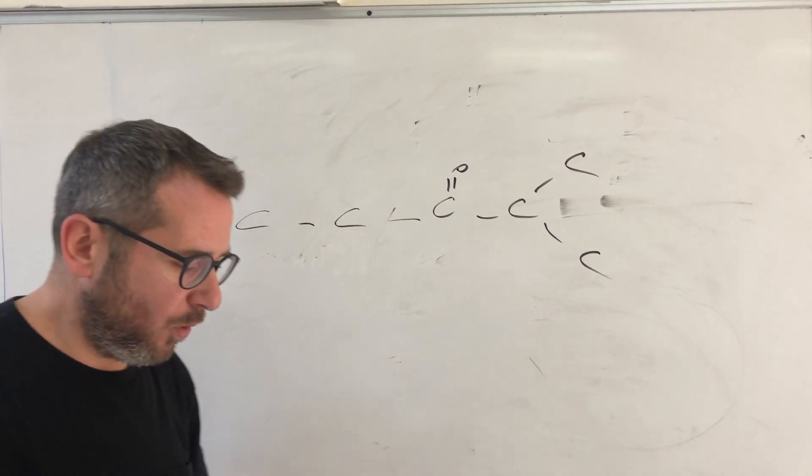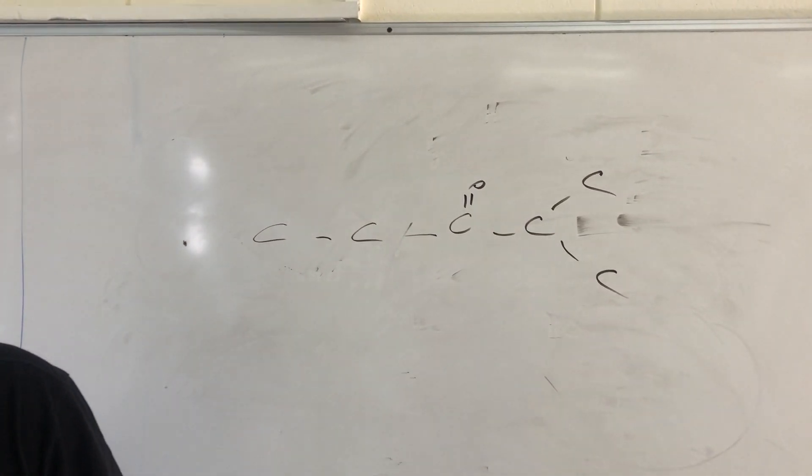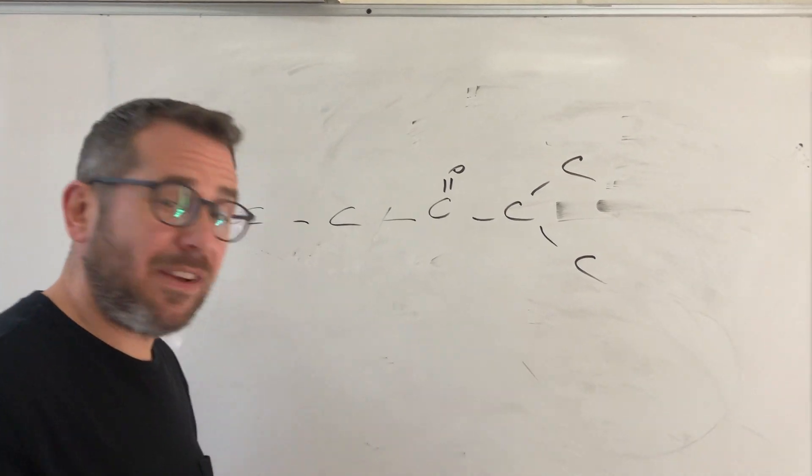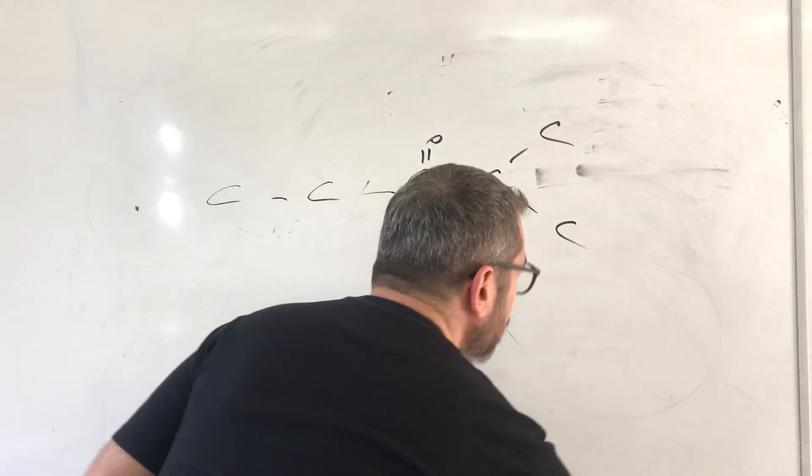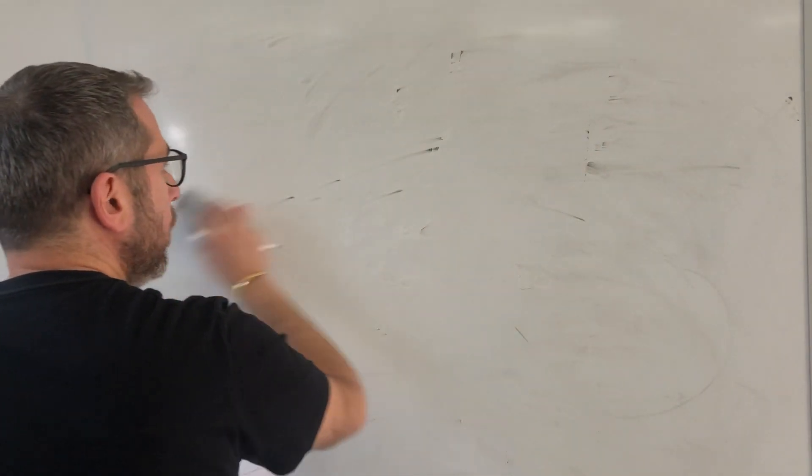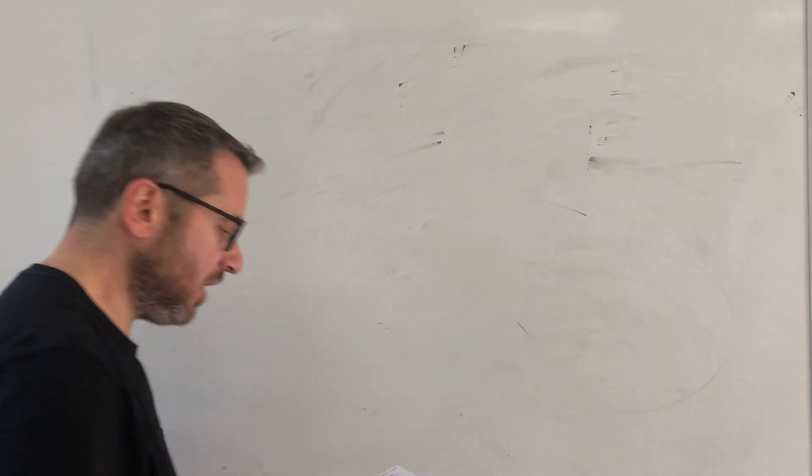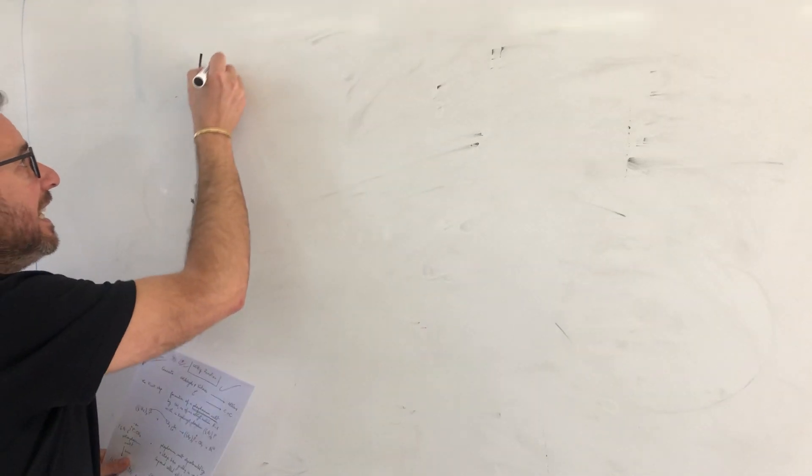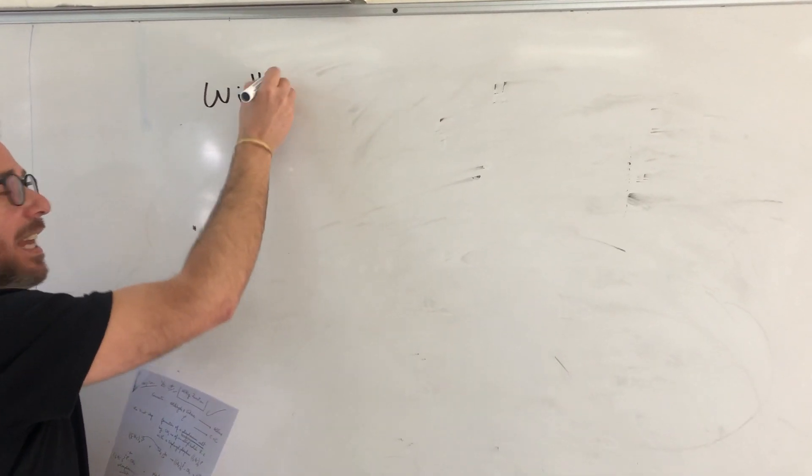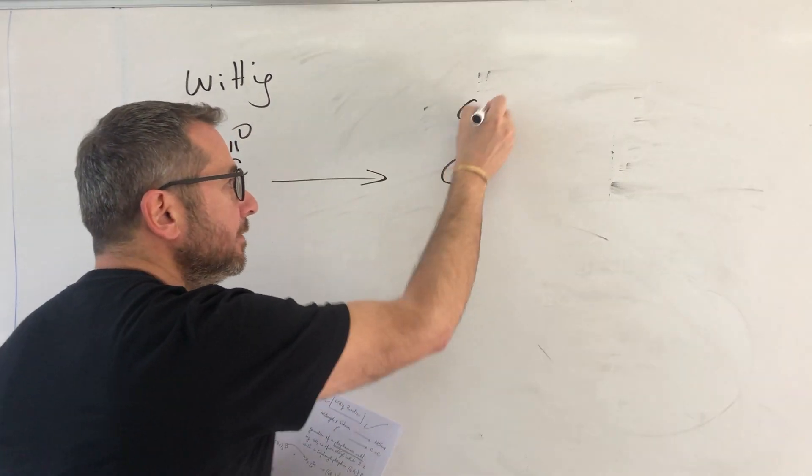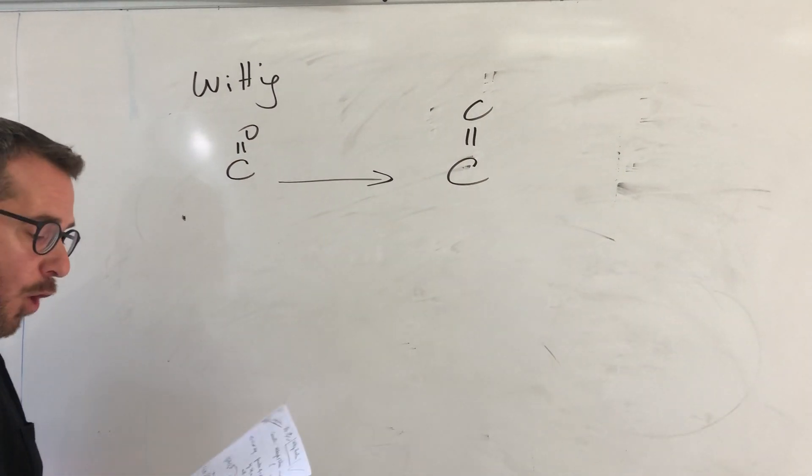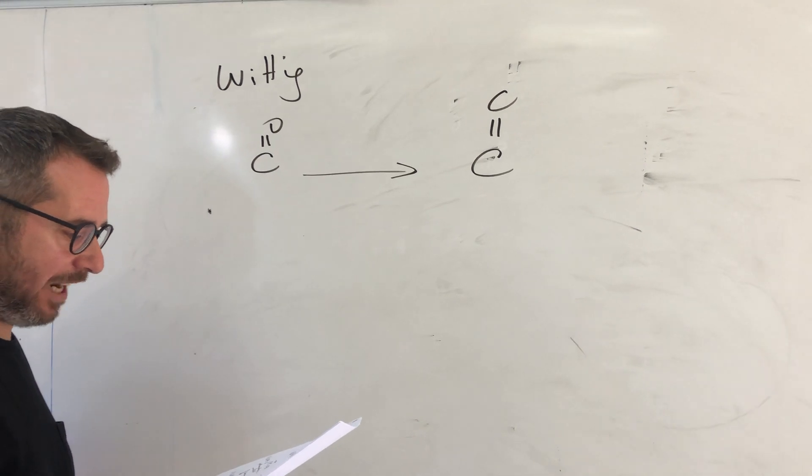Now we will move to, we still have 3 reactions to finish this chapter. We will move to Wittig reaction, which is completely a new reaction for you. What is Wittig reaction? Wittig is a reaction used to transform carbonyl to alkene. What do we need in this reaction?